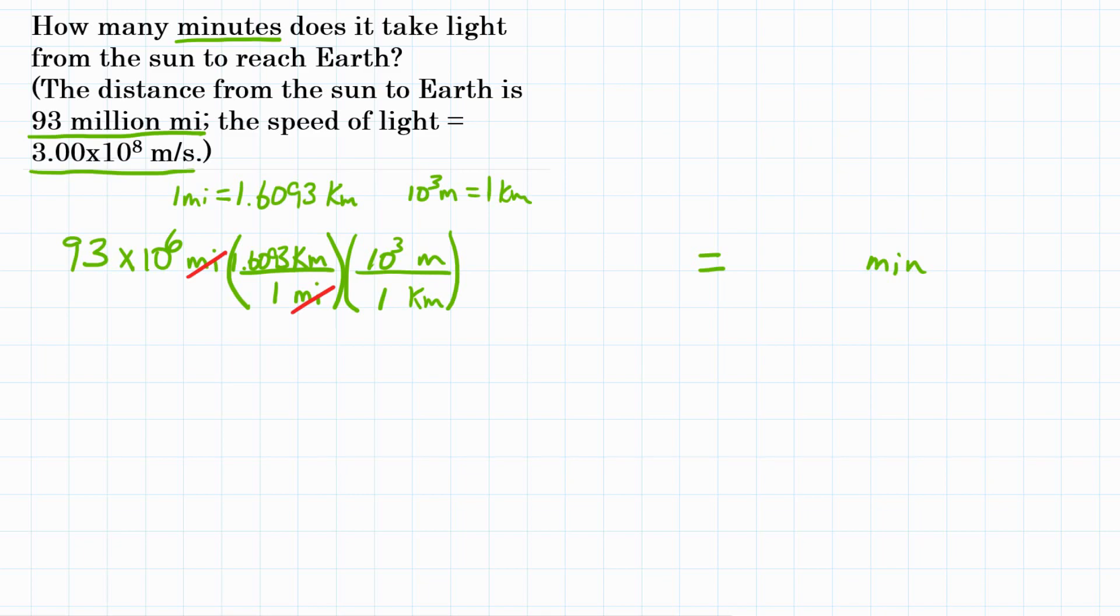And now kilometers will cancel out and we are at meters, which is where we need to be, because to use the speed of light we need meters and that can get us to seconds. So our third conversion factor will be meters on the bottom and then seconds on top.